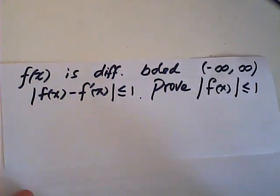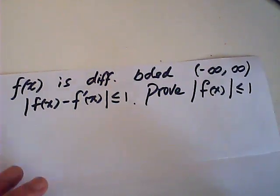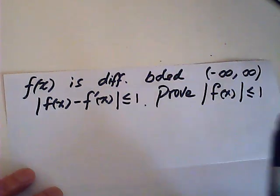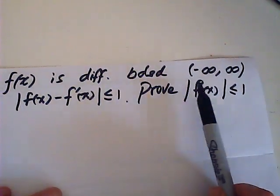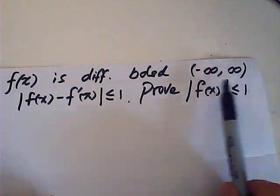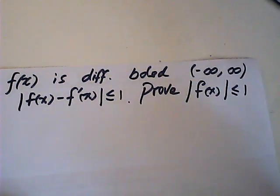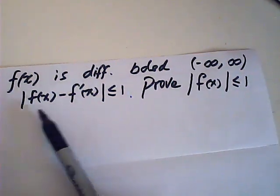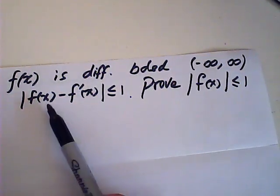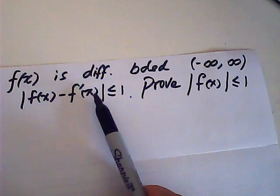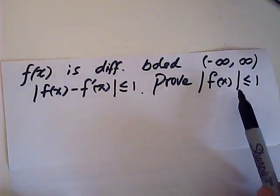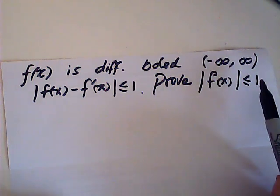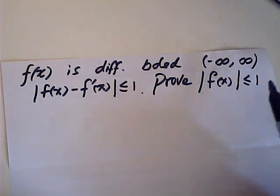Now here is a question, I find this very interesting. Given that f of x is differentiable and bounded over all real numbers, and also given that the absolute value of f of x minus f prime of x is less than or equal to 1, we want to prove that the absolute value of f of x is less than or equal to 1.